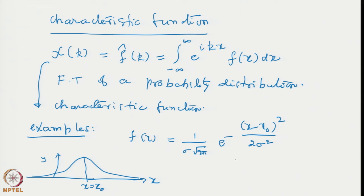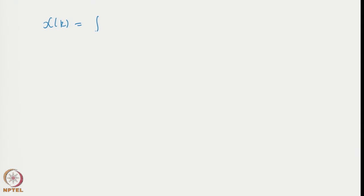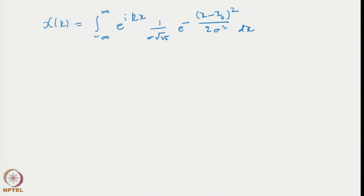Let f(x) = (1/(σ√(2π))) e^(−(x − x_0)²/(2σ²)). This function has a maximum at x = x_0 and is known as the Gaussian. We can obtain its characteristic function χ(k) by Fourier transforming. By definition, it is the integral of e^(ikx) times (1/(σ√(2π))) e^(−(x − x_0)²/(2σ²)) dx. We can write this in terms of exponential only by combining e^(ikx) with e^(−(x − x_0)²/(2σ²)).